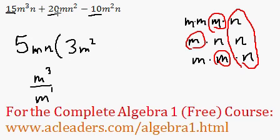Now, 20mn squared. 20 divided by 5 is just 4. m divided by m is just 1, so we don't even write it. They cancel out. And n squared divided by n, just n.